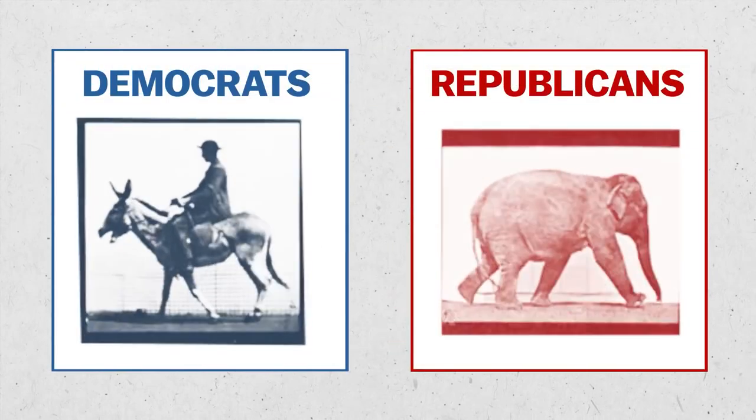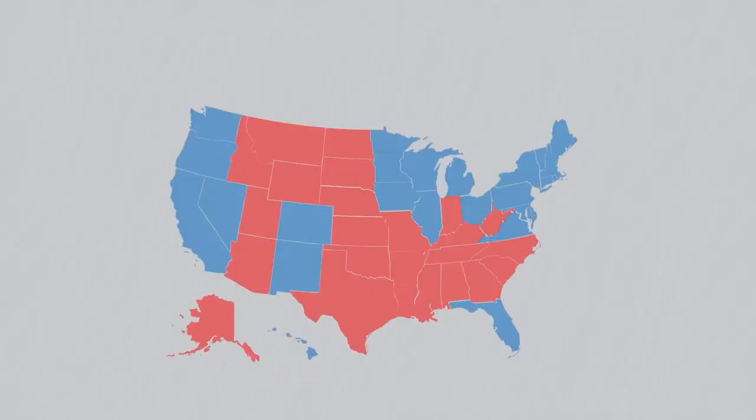Have you ever wondered why certain states tend to vote Republican while others vote Democrat? Is there a way to predict which way a state will vote in any given year? Let's say we want to predict whether a state is red or blue based on a few variables that we observe about it.